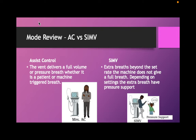As we start, let's review quickly the modes. We have two types of modes: assist control and SIMV. In assist control, the vent delivers a full volume or a full pressure breath, depending if you're on volume assist control or pressure assist control — whether it's the patient deciding they want a breath or the machine wanting a breath. Assist control does it all. I think of that strong, capable lady that does everything.